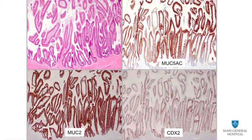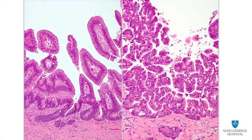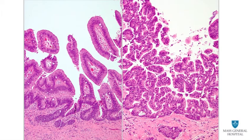Immunostains for glycoproteins reveal that the epithelial cells are marked by MUC5AC, which is a hallmark stain of IPMN, as well as MUC2, an intestinal glycoprotein, and CDX2, an intestinal transcription factor. The results are consistent with intestinal type IPMN. The duct lining epithelium exhibits a spectrum of dysplasia from intermediate grade, shown on the left, to high-grade dysplasia on the right. High-grade dysplasia is characterized by small but complex villi with high nuclear cytoplasmic ratio and lack of nuclear polarity.